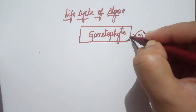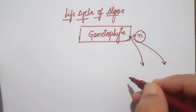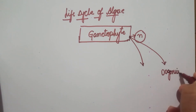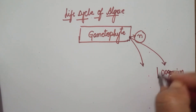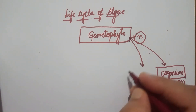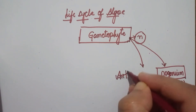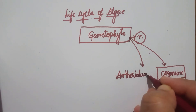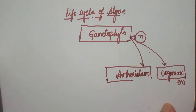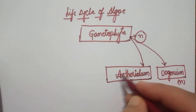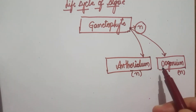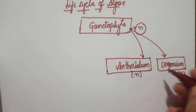On this gametophyte, we have production of two structures. The first one is called the oogonium — the name itself tells you it is the female gamete-producing structure, and it is also a haploid structure. The second structure, the male one, is called the antheridium. Remember, until we reach the higher plants (angiosperms), the male structures are called antheridium.